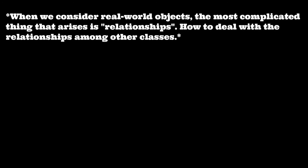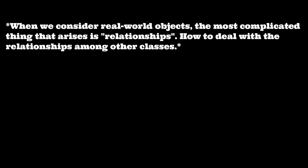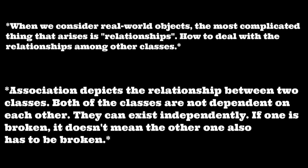Object-oriented programming mimics real-world objects. When we consider real-world objects, the most complicated thing that arises is relationships — how to deal with the relationships among different classes. Association depicts the relationship between two classes. Both classes are not dependent on each other, so they can exist independently. If one is broken, it doesn't mean the other one has to be broken.